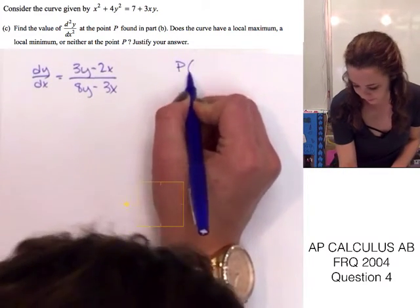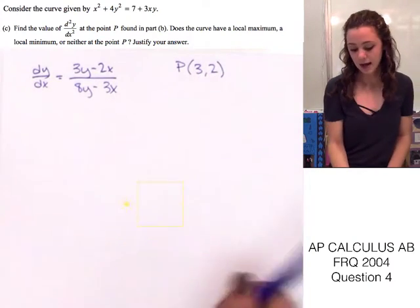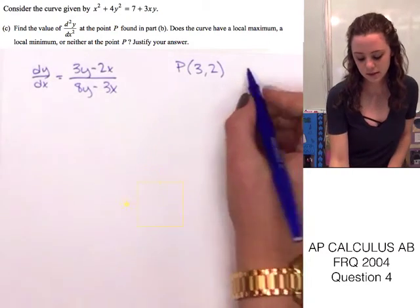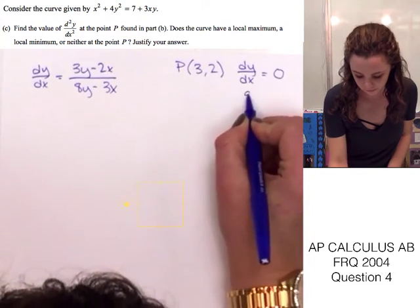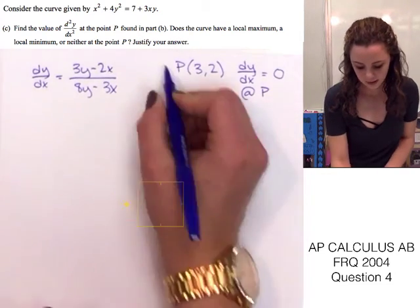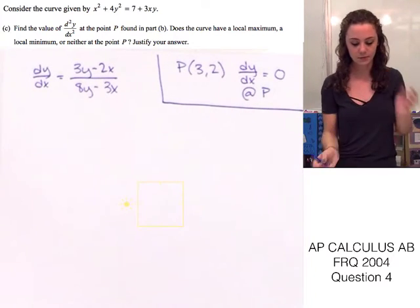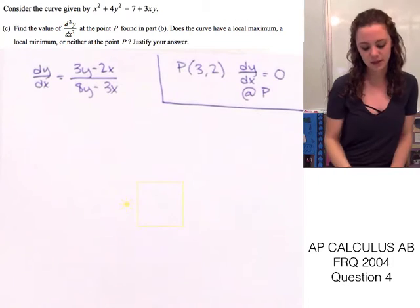And, at that point, the first derivative is equal to 0. So, I'm also going to write that. Okay, we're going to save this information for a little bit later in the problem. That just helps us to figure out all the information we have. So, let's go back to this and find the second derivative.